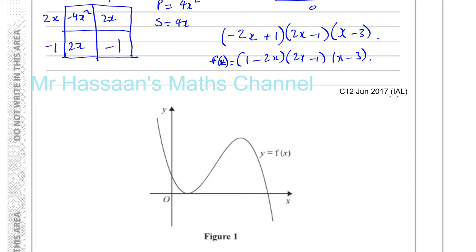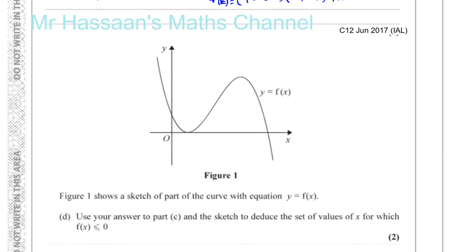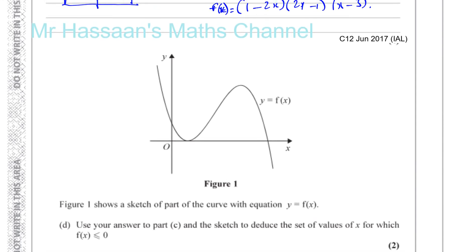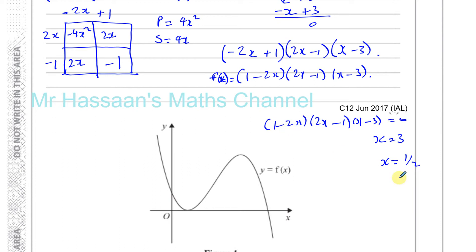The last part of the question asks us to use the answer to part C and the sketch to deduce a set of values for which f of x is less than or equal to 0. We can see that it's equal to 0 when 1 minus 2x equals 0, and 2x minus 1 equals 0, and x minus 3 equals 0. Solving these: x equals 3, and x equals a half — and this will also give you x equals a half, so it's like a repeated root. Taking the minus out, you get minus times 2x minus 1 times 2x minus 1 times x minus 3.